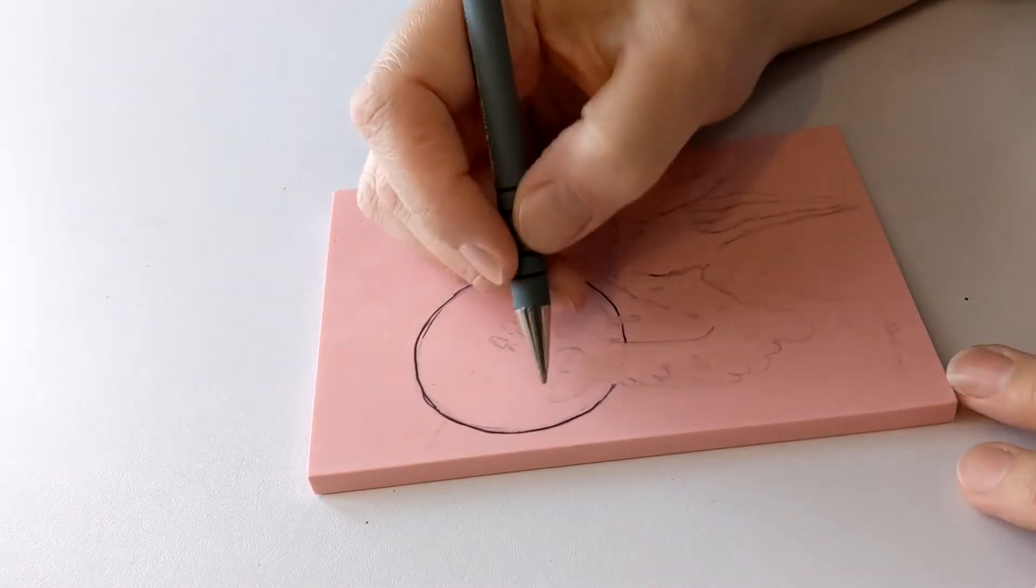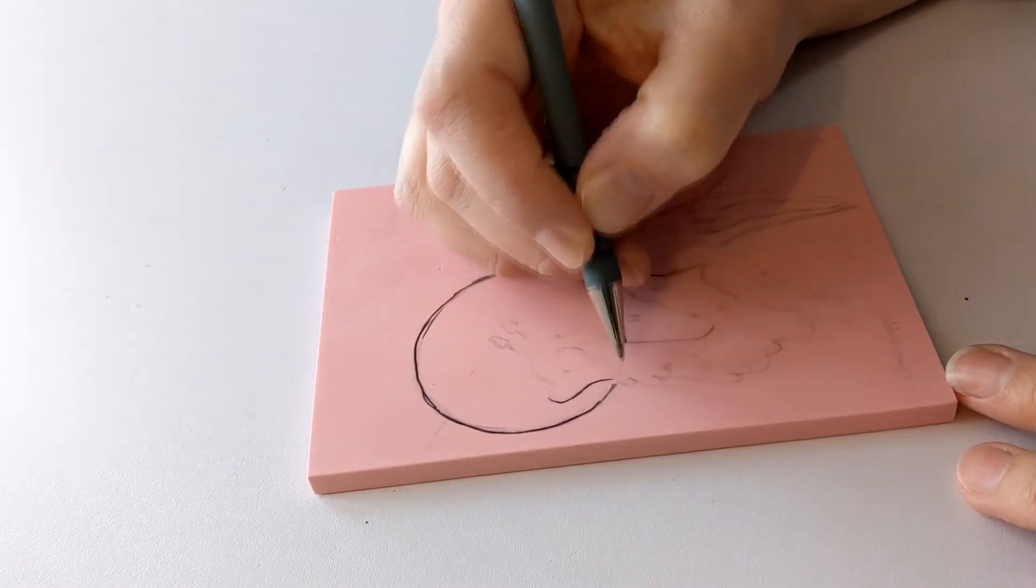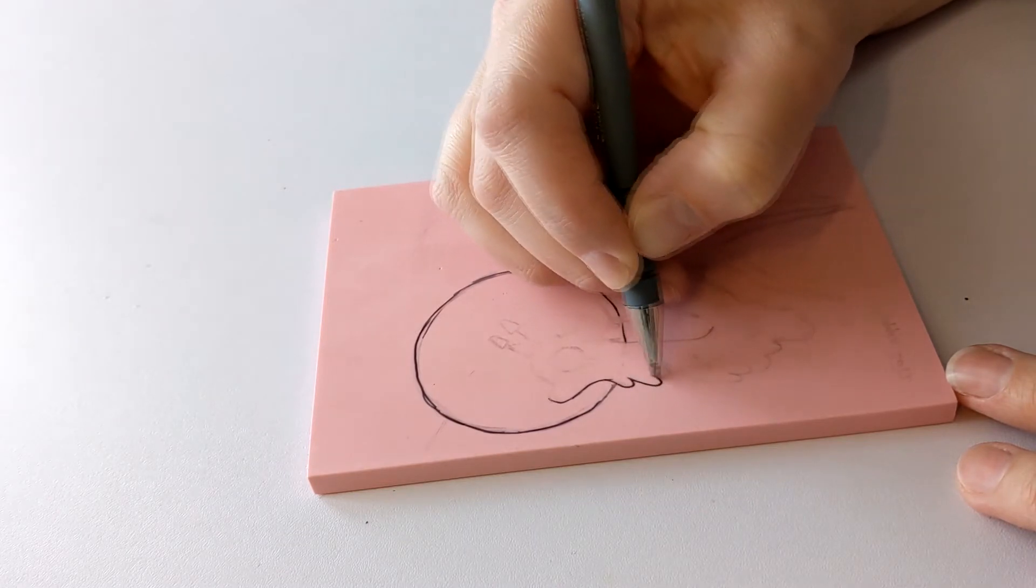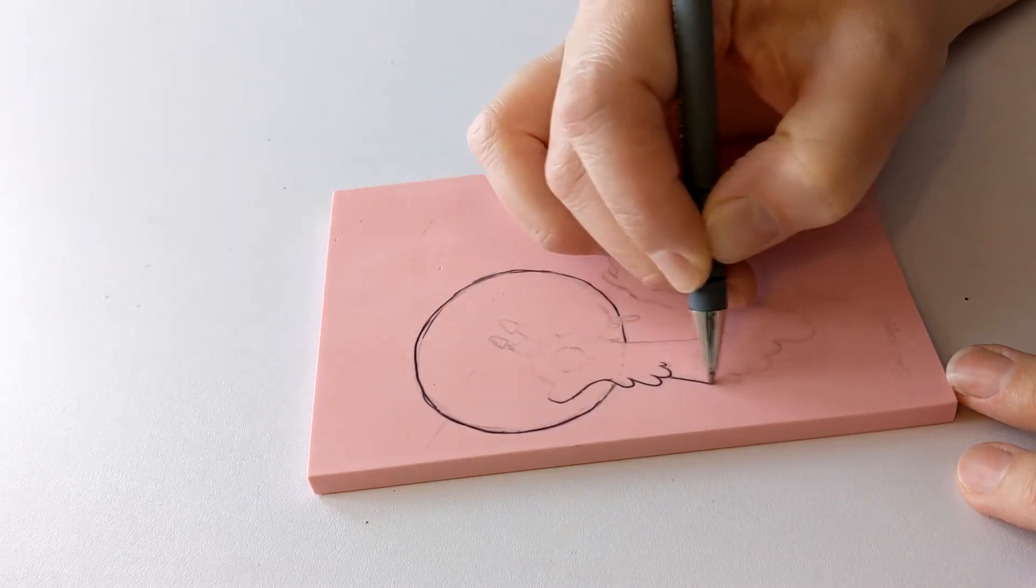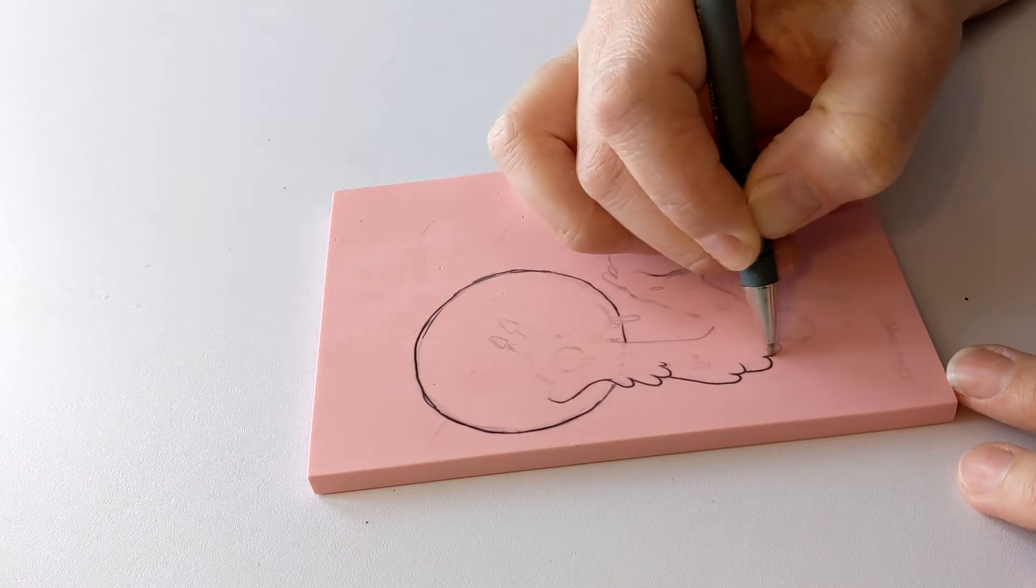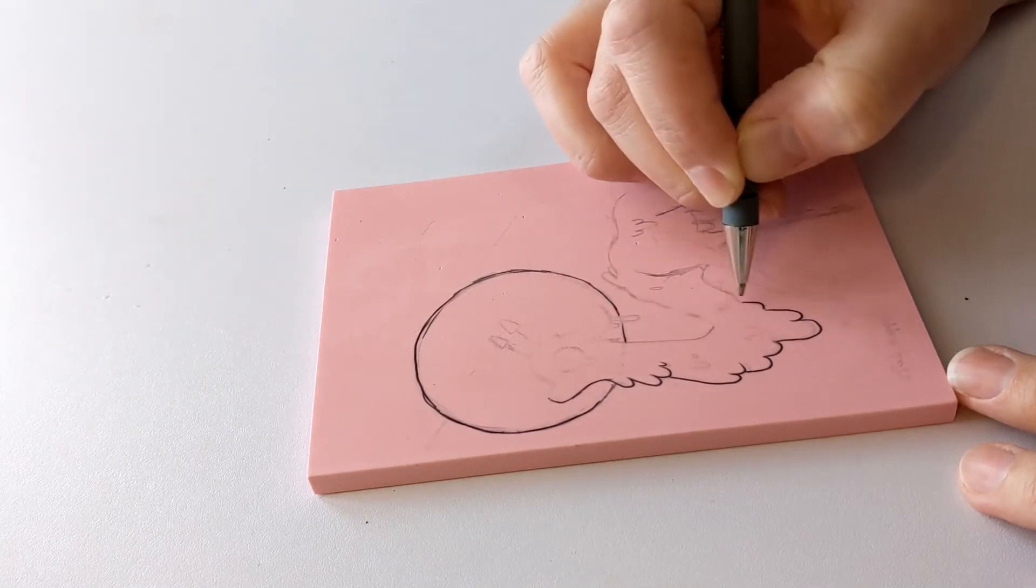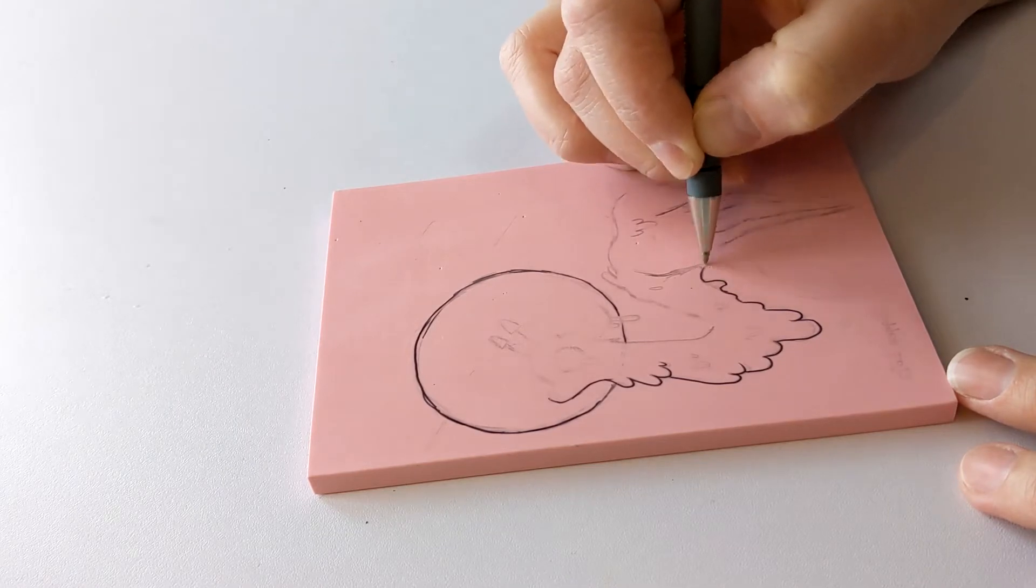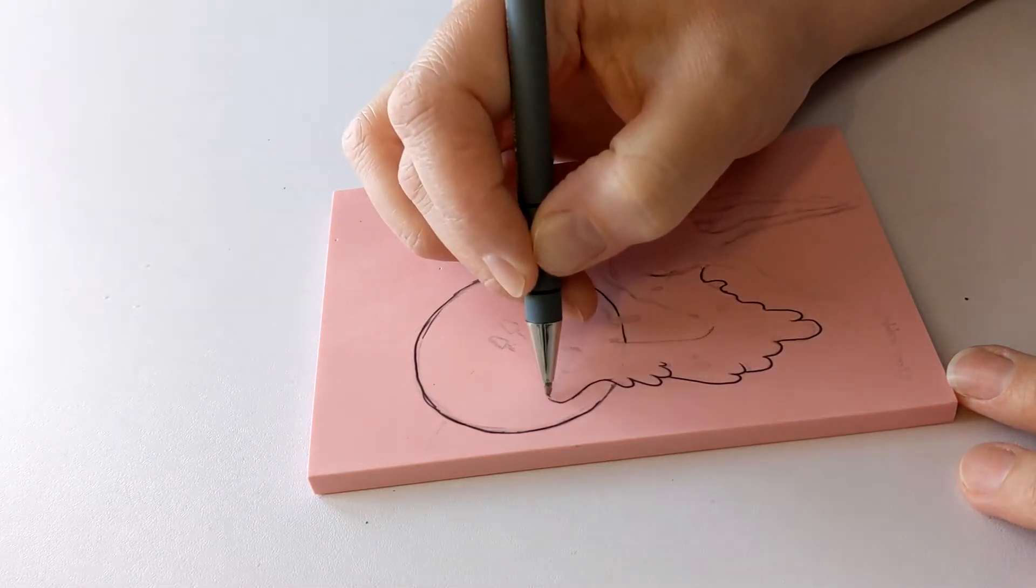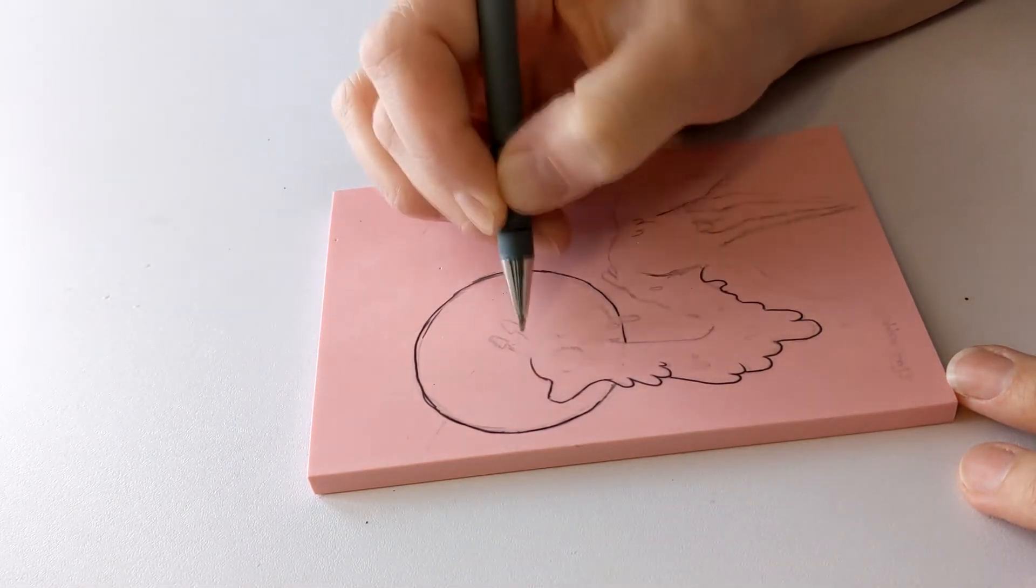So I made the design really simple because I don't know how to do lino cuts. I haven't done them before. I'm not very practiced at it, but I thought it was worth a shot. So I designed it really quickly on the computer, and then I just used some tracing paper to transfer it onto the block, and then a ballpoint pen to kind of darken up all those lines.